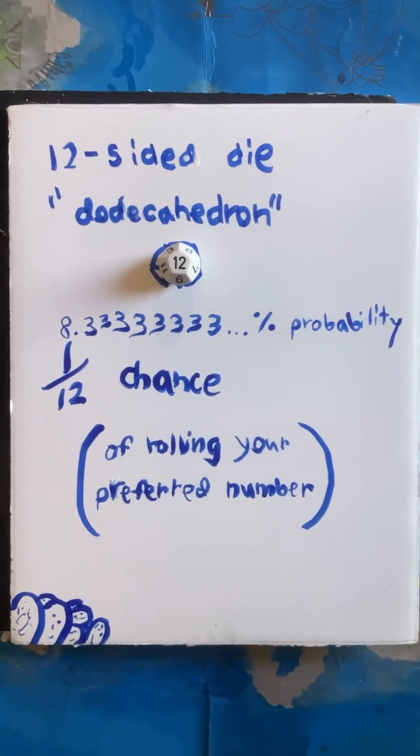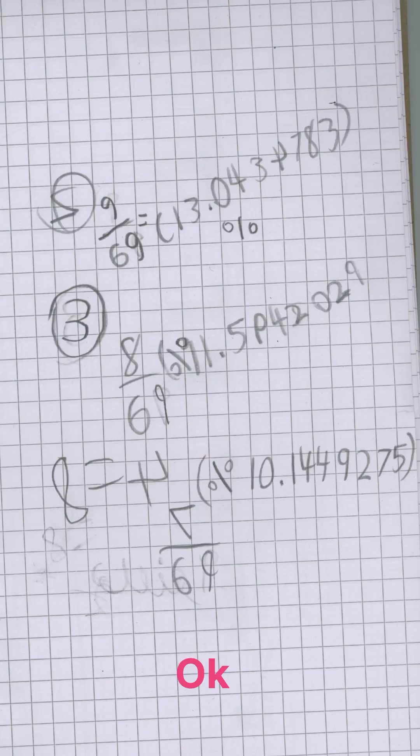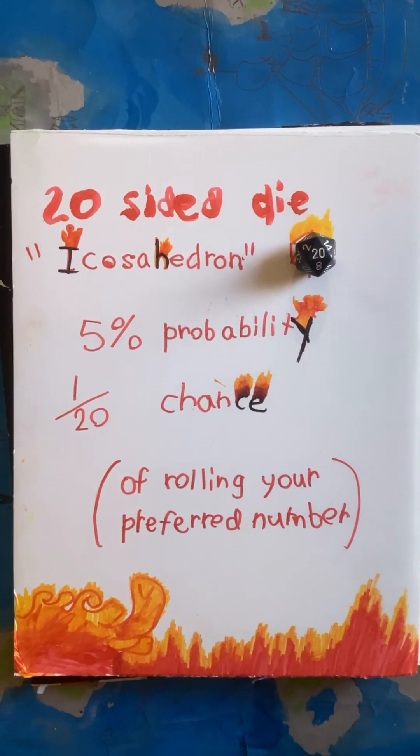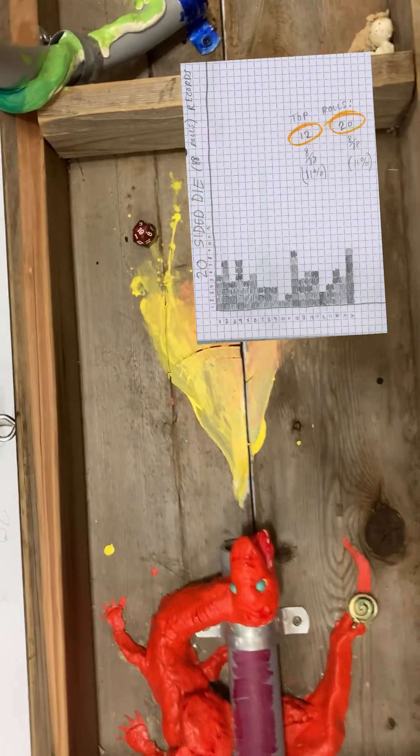The D12 had a top number of 2. The D20 top rolls were 12 and 20, tied at 11% each.